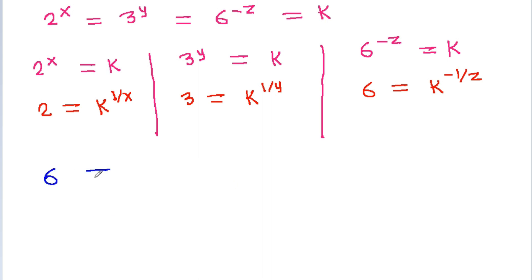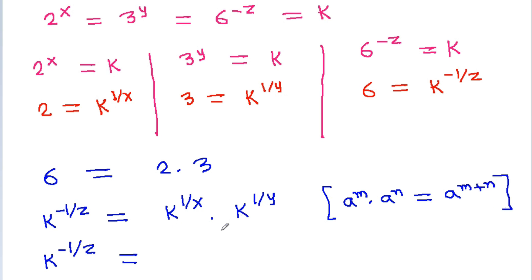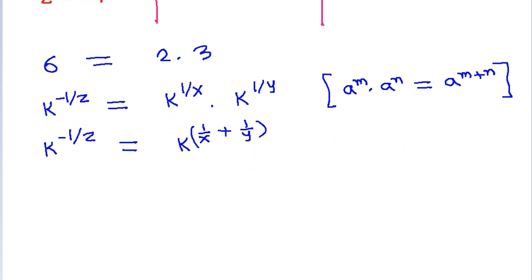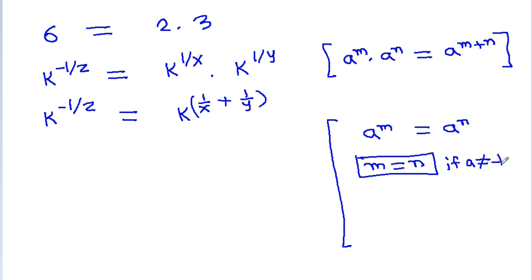We know that 6 is equal to 2 times 3, and 6 is equal to k power minus 1 by z. That is equal to k power 1 by x times k power 1 by y. Using the rule that a power m times a power n is equal to a power m plus n, this will be equal to k power 1 by x plus 1 by y. And if a power m is equal to a power n, then m is equal to n, provided a is not equal to minus 1, 0, or 1.